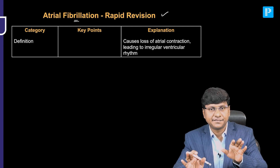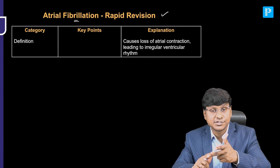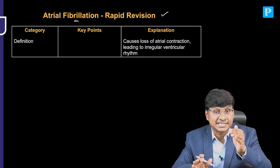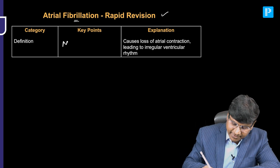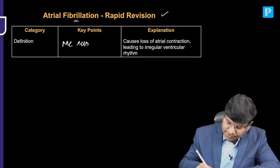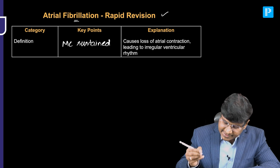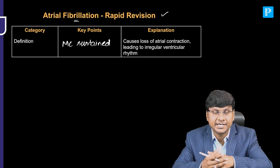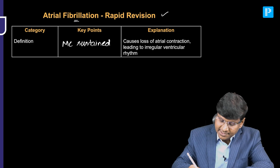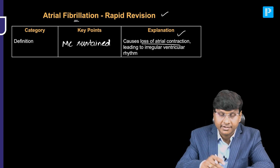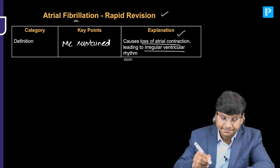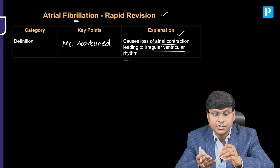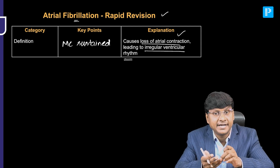Among the various types of arrhythmias — atrial flutter, atrial fibrillation, paroxysmal supraventricular tachycardia, VT, VF — the most common sustained arrhythmia is atrial fibrillation. What exactly happens is the atrial rate abnormally increases where the atrial rate will be around 300 to 400 per minute. There will be loss of atrial contraction and that will lead to irregular ventricular rhythm.